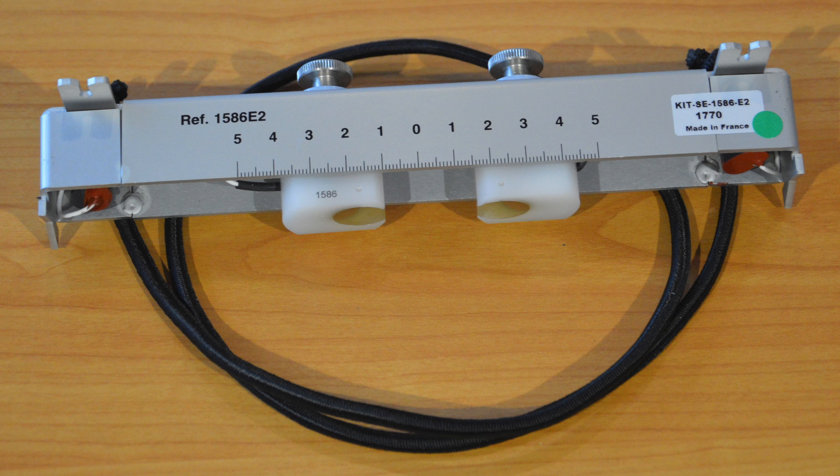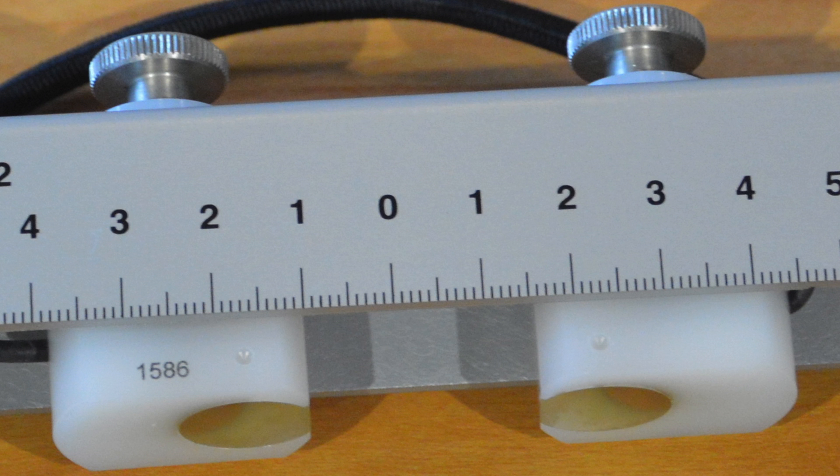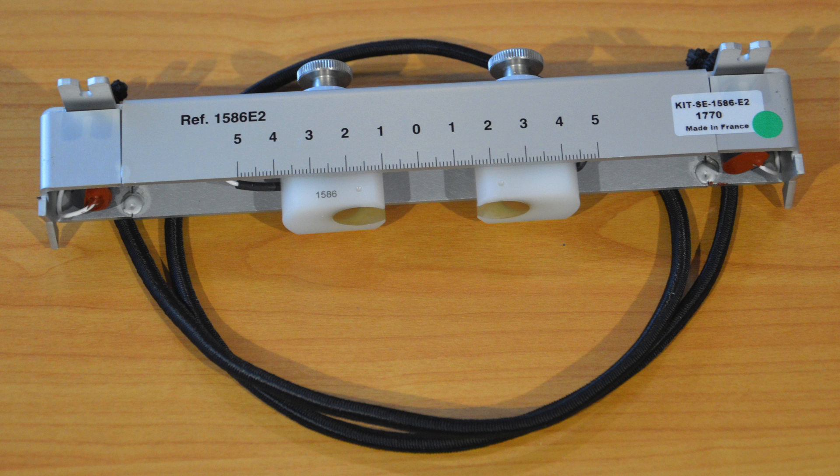The 1586 probes are mounted in a rail. The probe distance is measured between the two dots on the side of the probes using the integrated ruler. The elastic strap has to be wrapped around the pipe to install this support.